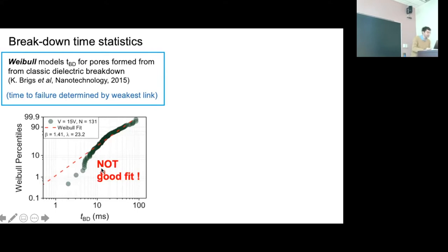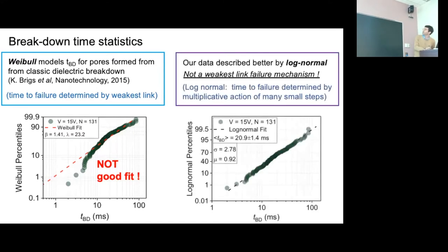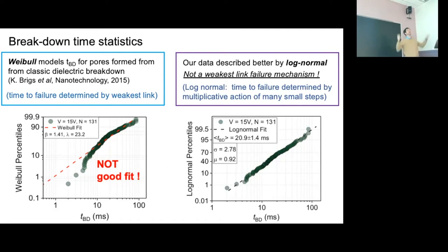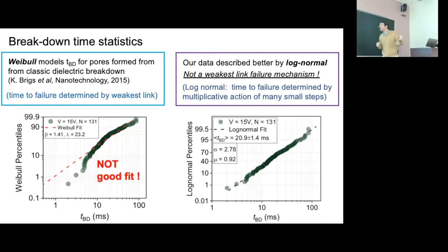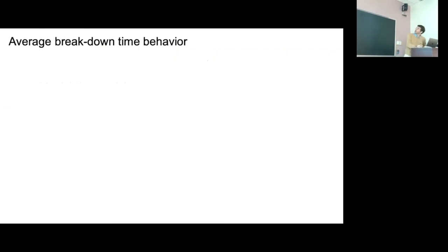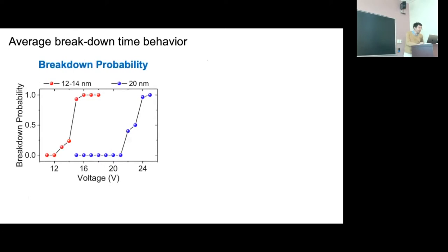Our data is better described by a lognormal distribution. The Weibull is the classic distribution for a weakest-link failure mechanism — where there are many possible failure mechanisms but one weak link dominates. We don't see the Weibull, which indicates our local probe is looking at generic properties of the membrane, not a weakest-link failure mechanism. Looking at breakdown probability as a function of voltage for two nitride thicknesses — around 12 to 14 nm — we see rapid thresholds at which pores form, around 13 volts for 10-12 nm and about 22 V for the clean silicon nitride.